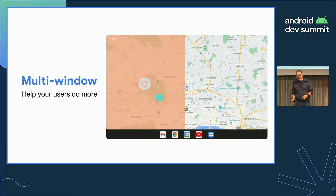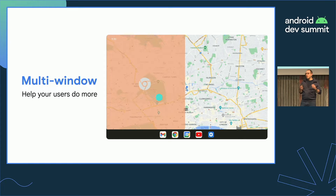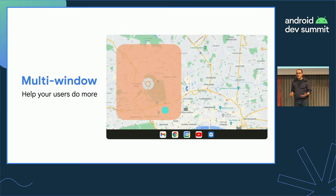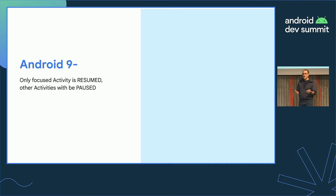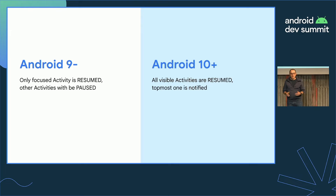With multi-window you can do two things at the same time, either from the same app or from different apps. This means that some things have to change — for example, multiple activities being resumed at the same time. There have been important changes across versions of Android, one of which is the change in lifecycle management for multi-window. Before Android 10, only the focused activity was resumed. With Android 10 and newer, all the activities currently on screen are resumed.